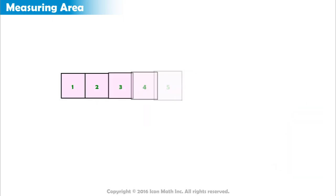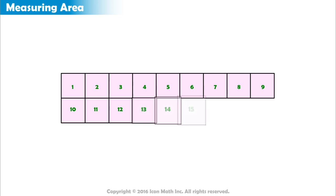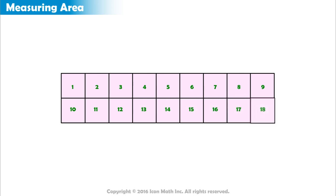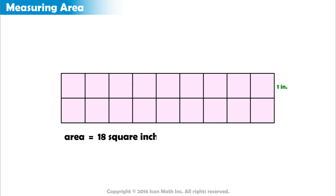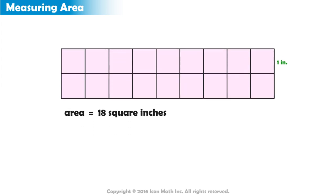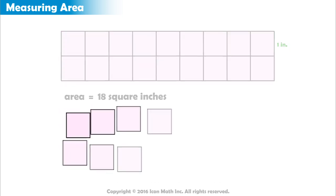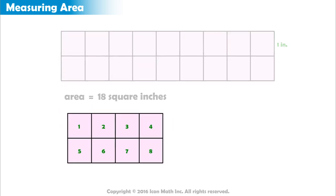For example, this rectangle is made up of eighteen squares, each with a side length of one inch. So we say its area equals eighteen square inches. And this rectangle is made up of eight squares with a side length of one inch, so its area is eight square inches.